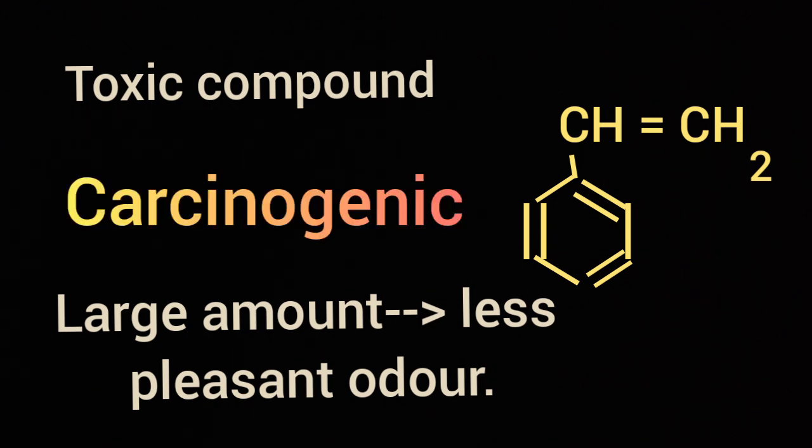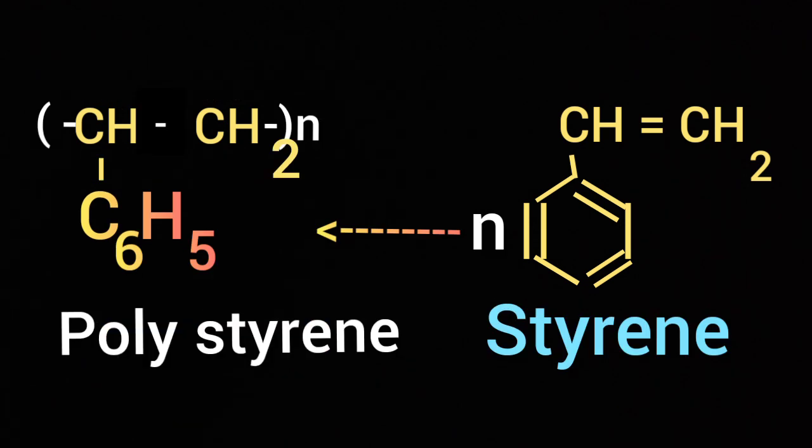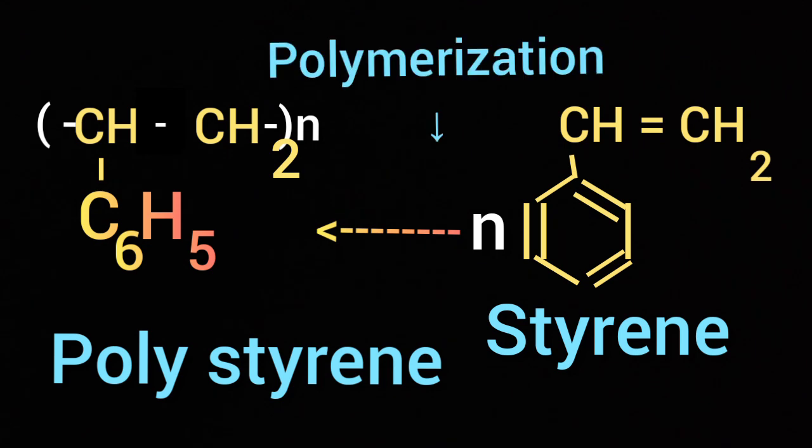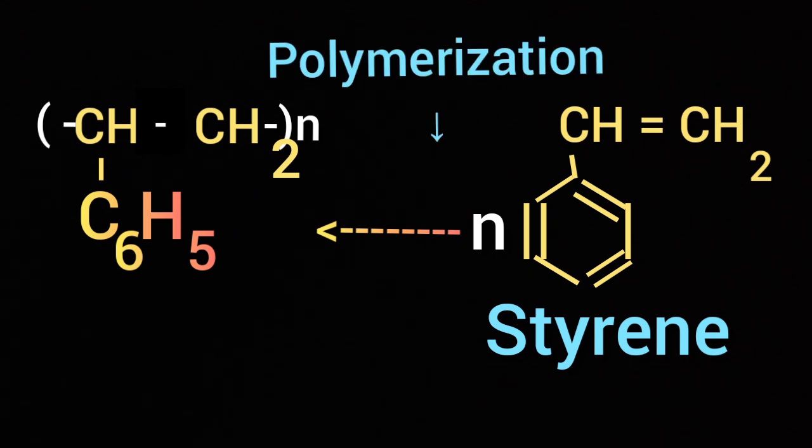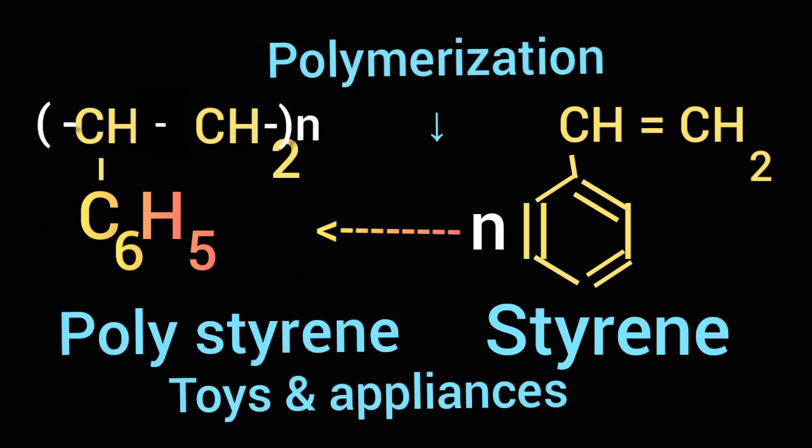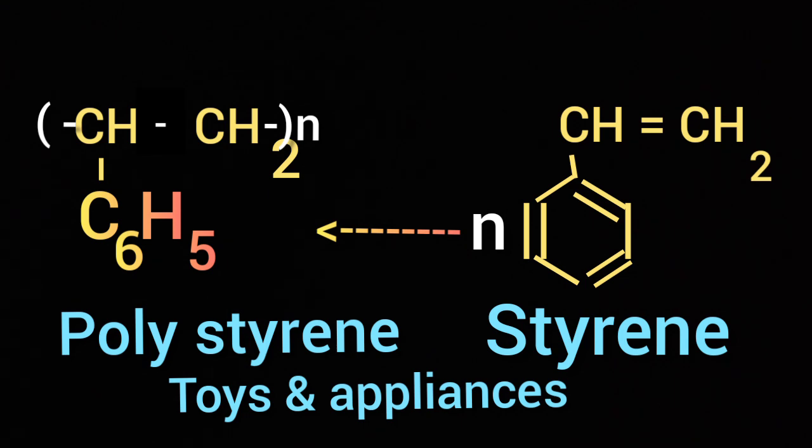It is used to prepare polystyrene, a polymer. Styrene on polymerization gives polystyrene, which is used to prepare toys and appliances.